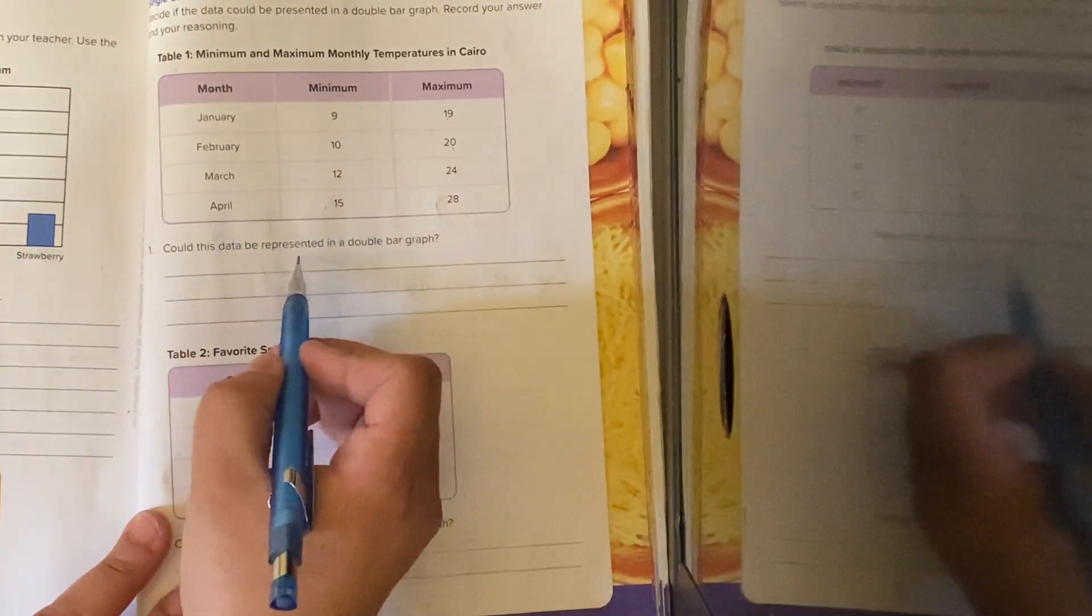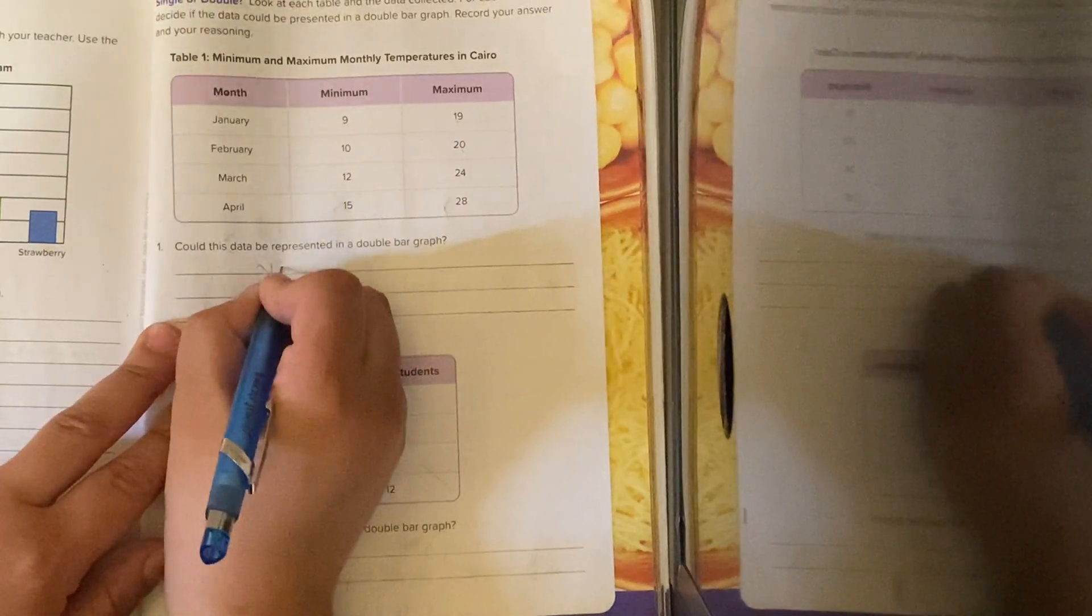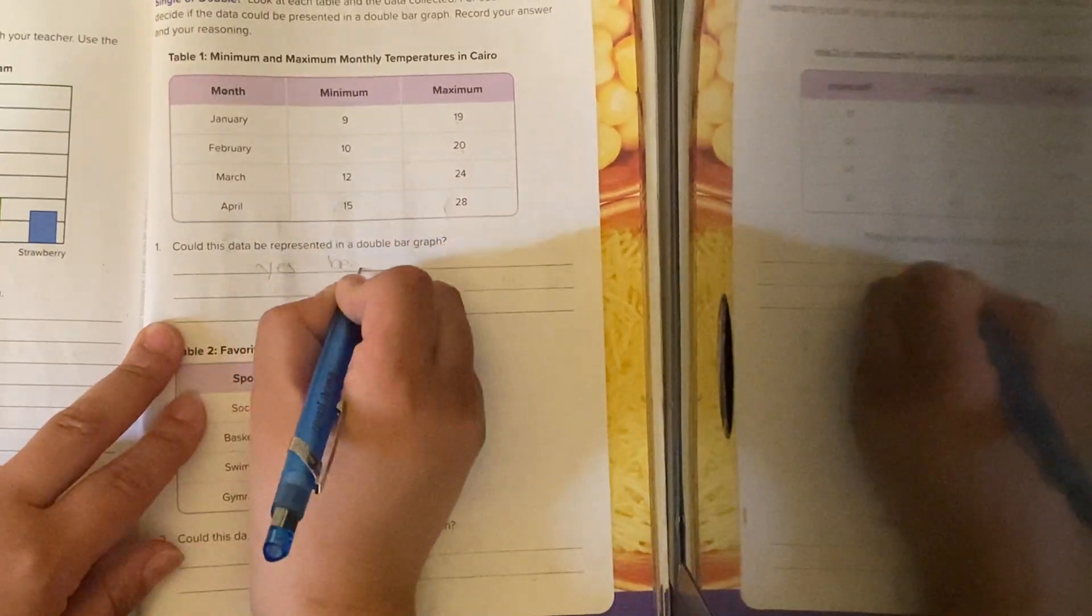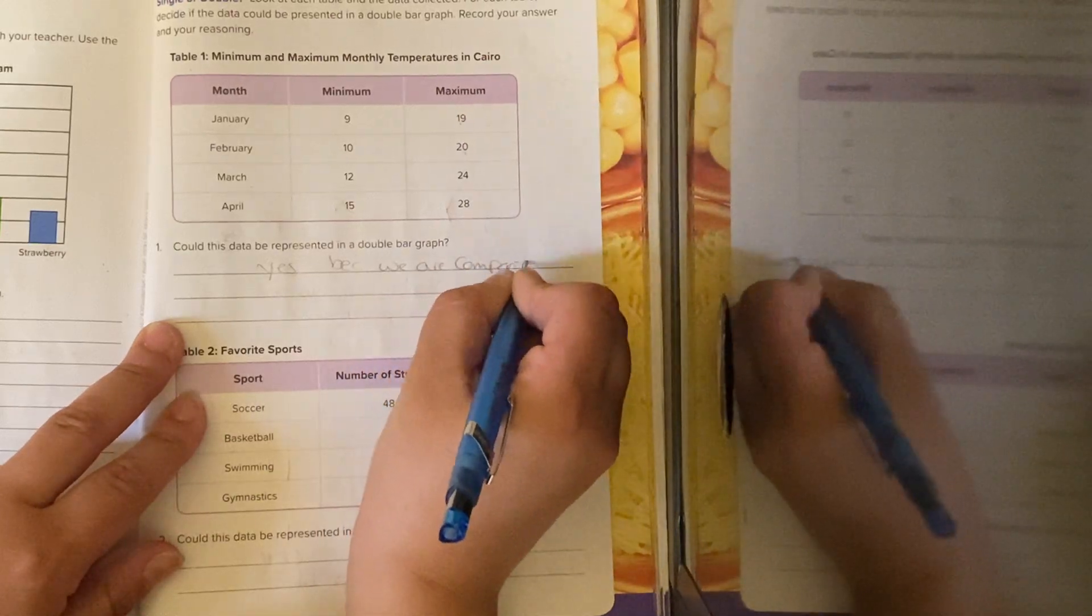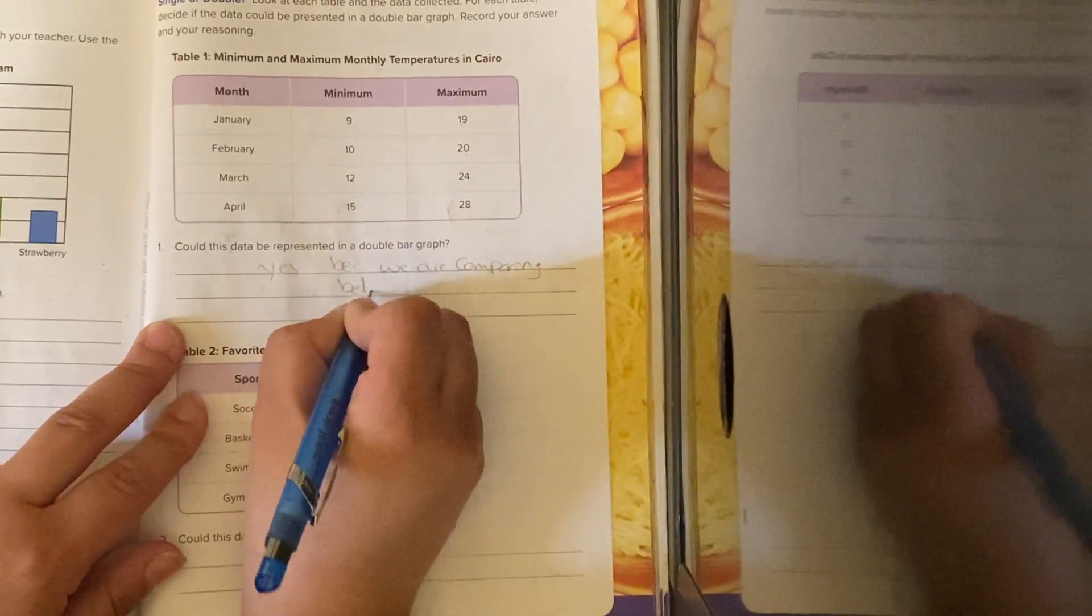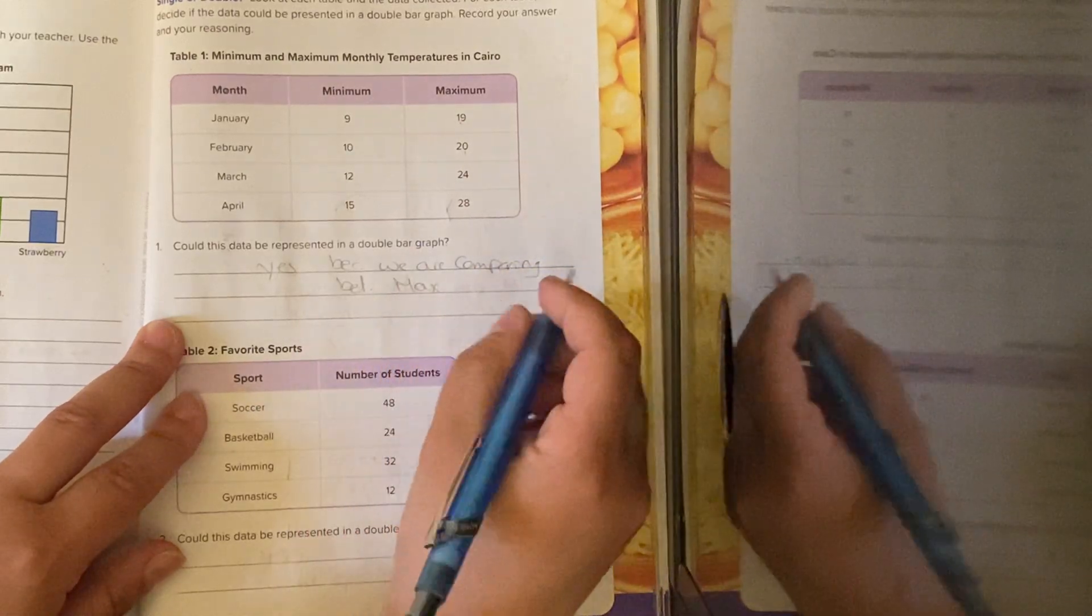Here he is asking, could this data be represented in a double bar graph? The answer will be yes. Why? Because we are comparing between maximum and minimum temperature in each month.